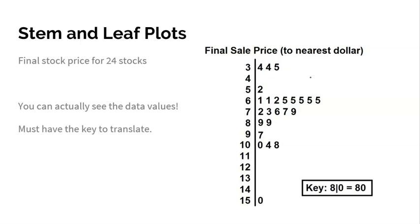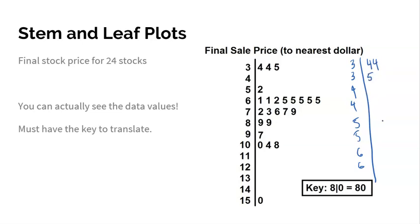There is also a split stem and leaf plot, used when you have a lot of data. Instead of one stem row, you split each stem into two: the first row covers the lower half (e.g., 30–34) and the second covers the upper half (35–39). This prevents 80 numbers stretching out in one row, keeping the plot neat and readable for large datasets. We don't do it too often, but it's good to know.